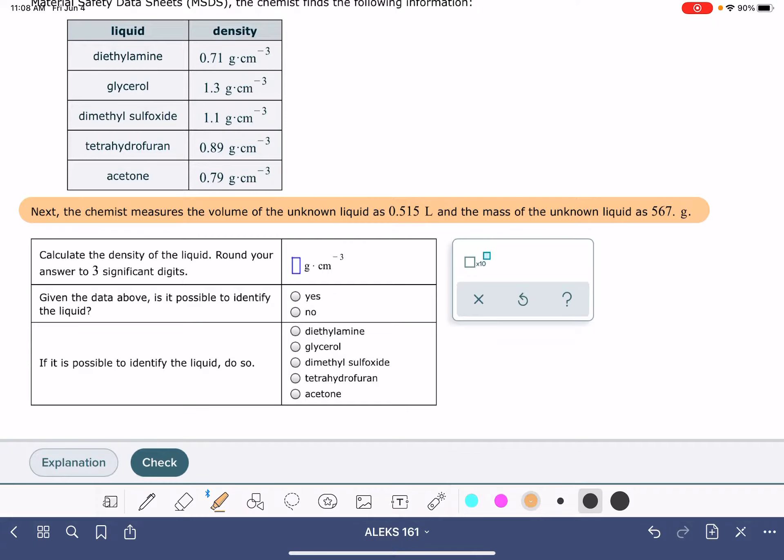This problem is telling us that we have a liquid with a volume of 0.515 liters and a mass of 567 grams. It wants us to calculate the density of this liquid. Density for a liquid is going to be the mass of the liquid divided by the volume of the liquid.